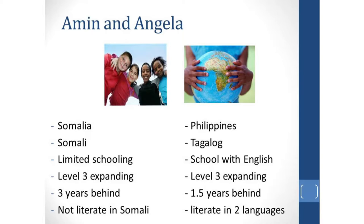Angela is also in Amin's grade five classroom. She arrived from the Philippines six months ago. She learned some English in school in the Philippines and her first language is Tagalog, so she's able to read and write two languages. She's also at a level three expanding in her English proficiency. She's shy and speaks very little in class but she says that she likes school. She's reading at an end of grade three level and she usually comprehends what she reads. Angela loves swimming.